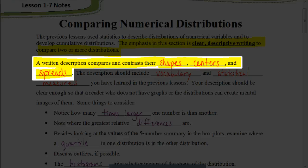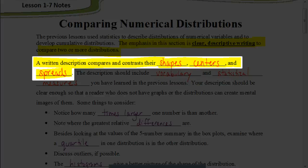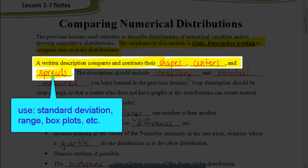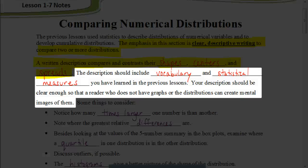Then we would look at the centers. That's the measure of centers, remember, would be looking at the mean and the median. And the spread of data, there's a number of ways you could look at that by looking at the standard deviation, the range. You could even look at the box plots and deal with the spread of data there. The description should include vocabulary and any of the statistical measures that we've been talking so far in this chapter.